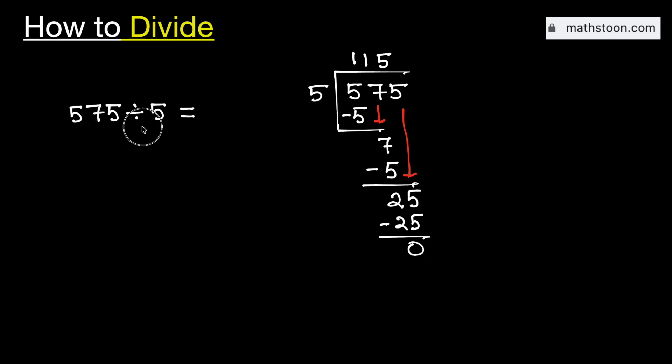Therefore, 575 divided by 5 is equal to 115. And this is our final answer.